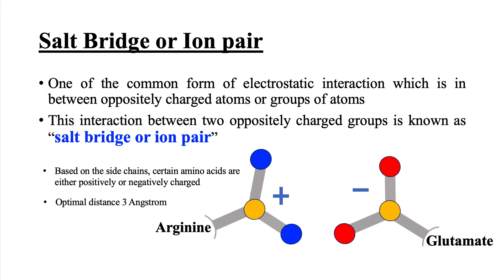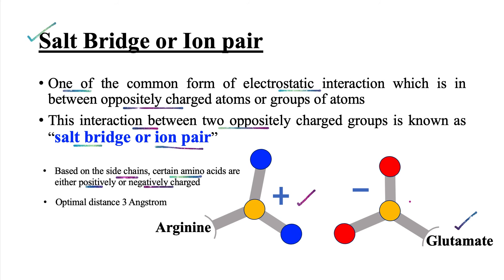We have another type of non-covalent interaction known as salt-bridge or ion pairing. It is one of the common forms of electrostatic interaction, occurring between oppositely charged atoms or groups of atoms. We know that, based on their side chains, certain amino acids are either positively or negatively charged. For instance, arginine has a side chain that is positively charged, and glutamate has a side chain that is negatively charged. These two oppositely charged amino acids can interact with each other through salt-bridge or ion pairing if they come close together at an optimal distance of 3 angstroms.